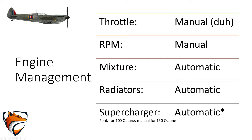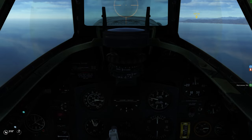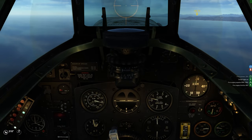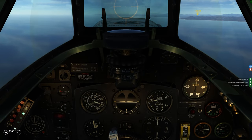If you ever select the 150 octane fuel loadout option, you need to switch the supercharger stage manually, but more about that later. It's pretty straightforward: when you apply more throttle you get more power to the engine. More power leads to better performance statistics across the board — you climb faster, airspeed will increase, and so on.